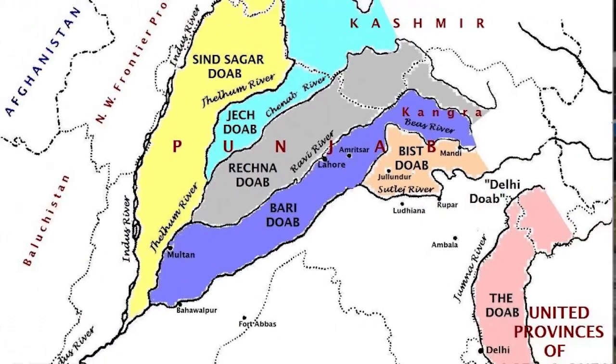The Indus river system forms many Doabs — meaning the area between two rivers. For example, Rachna Doab is between the Ravi and Chenab; Chaj Doab is between the Chenab and the Jhelam; Bist Doab is between the Beas and the Satlaj; and Bari Doab is between the Beas and the Ravi.